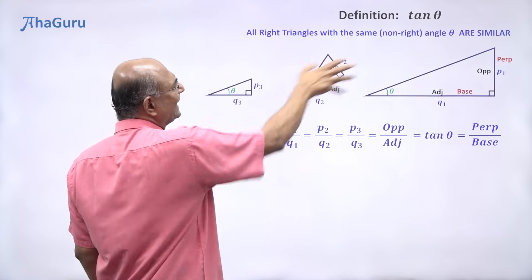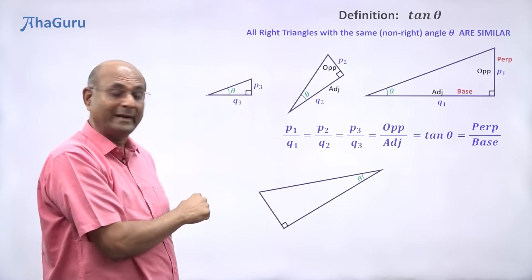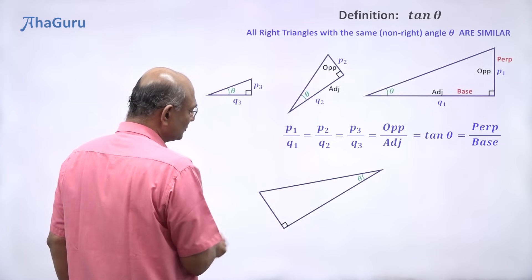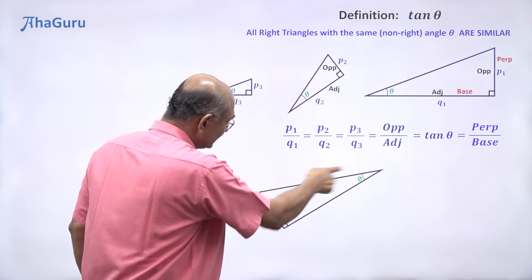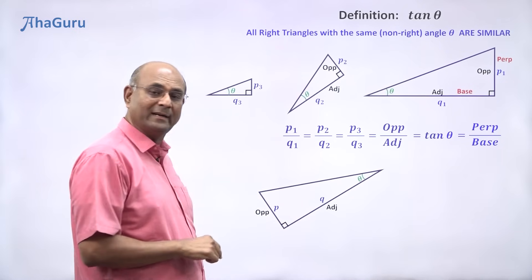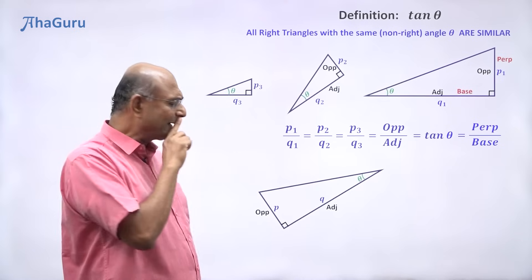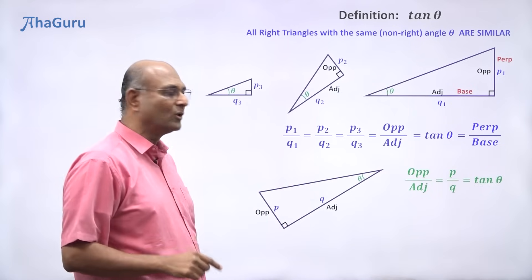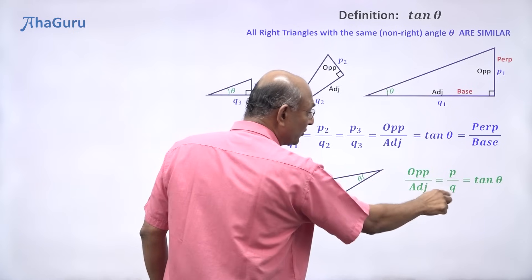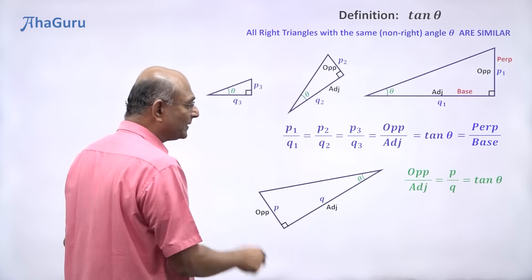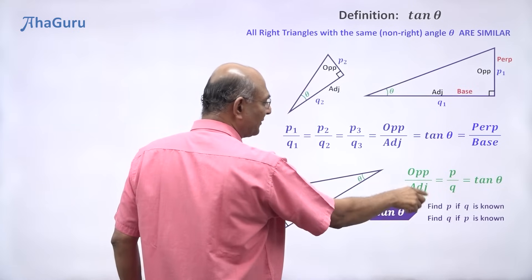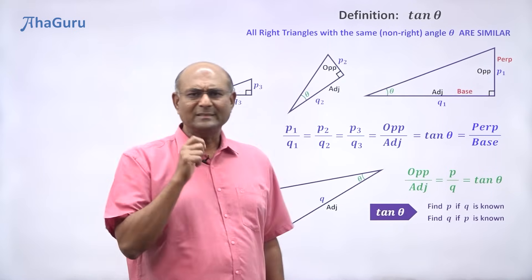Now, suppose I look at a triangle that looks like this with the angle in a different position. Is this a right-angle triangle? Yes. So this angle is theta. What will be opposite to theta? This side — so this is the opposite side, let us say P. This is the hypotenuse and this is the adjacent side, let us say Q. So tan theta will be opposite by adjacent, which is P by Q. If I knew Q, then Q times tan theta gives me P. And if I knew P, then P divided by tan theta gives me Q. So if I know tan theta, I can find P given Q, or Q given P.